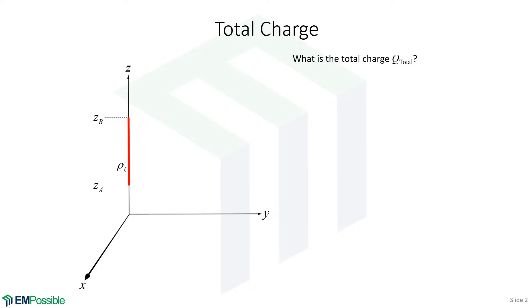The first question is: what is the total charge of that line charge? Let's follow the recipe that we've laid out in the theory lectures. Step one: draw the problem — we've already done that. Step two: choose a coordinate system. This looks rather Cartesian to me, so let's choose Cartesian coordinates.